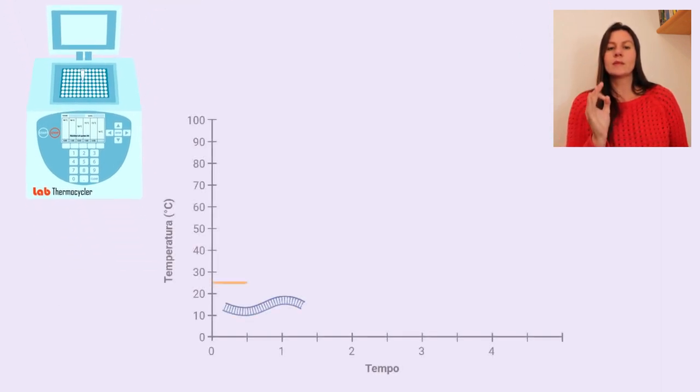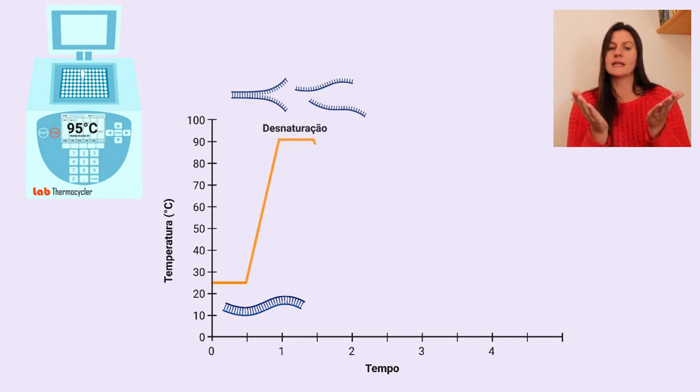Inicialmente, o equipamento faz com que cada reação atinja uma temperatura de 95 graus Celsius. Essa temperatura faz com que se abra a dupla hélice da molécula de DNA, desfazendo as ligações de hidrogênio, processo esse chamado de desnaturação.